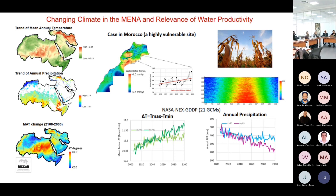Understanding the optimization of crop water needs requires understanding evapotranspiration in arid and semi-arid regions. The temperature trends in different parts of MENA show that the difference between long-term trends of maximum and minimum temperature is also increasing — the divergence is increasing. That means the system is becoming more and more dry, the atmosphere needs more moisture, and that implies evapotranspiration will increase.